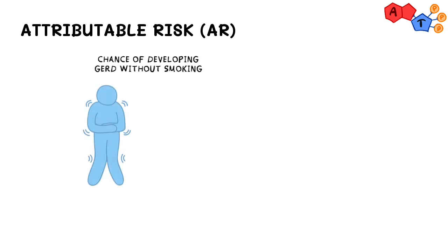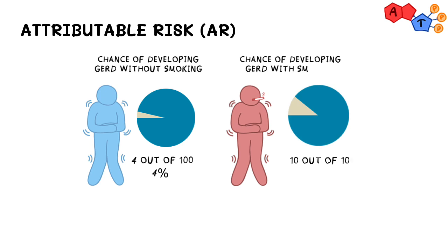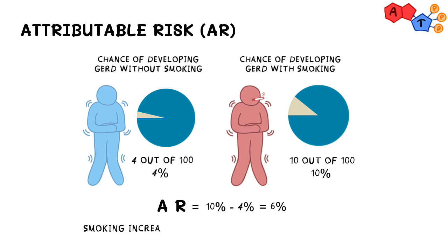Now when it comes to attributable risk, it's the opposite of absolute risk reduction, so we'll need an example where the relative risk is greater than 1. Suppose the chance to develop gastroesophageal reflux disease, or GERD, without smoking was 4 out of 100, or 4%, and that developing it when smoking is 10 out of 100, or 10%. Here, we can attribute some risk to smoking — specifically, 10% minus 4% equals 6%. Therefore, smoking increases your chances of developing gastroesophageal reflux disease by 6%.